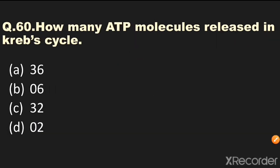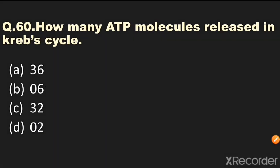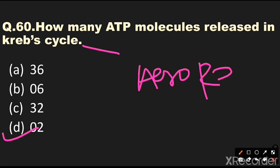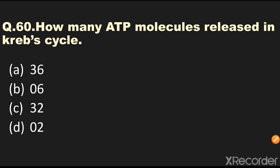Question number 60: How many ATP molecules are released in the Krebs cycle? Options are 36, 6, 32, or 2. The answer is 2 — 2 ATP molecules are released in the Krebs cycle. The Krebs cycle is part of aerobic respiration. This is the end of the video. Thank you for watching.